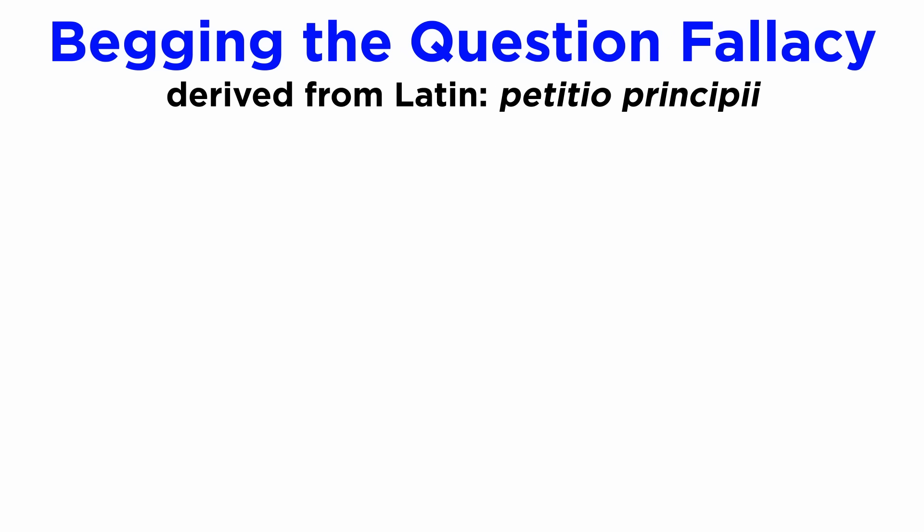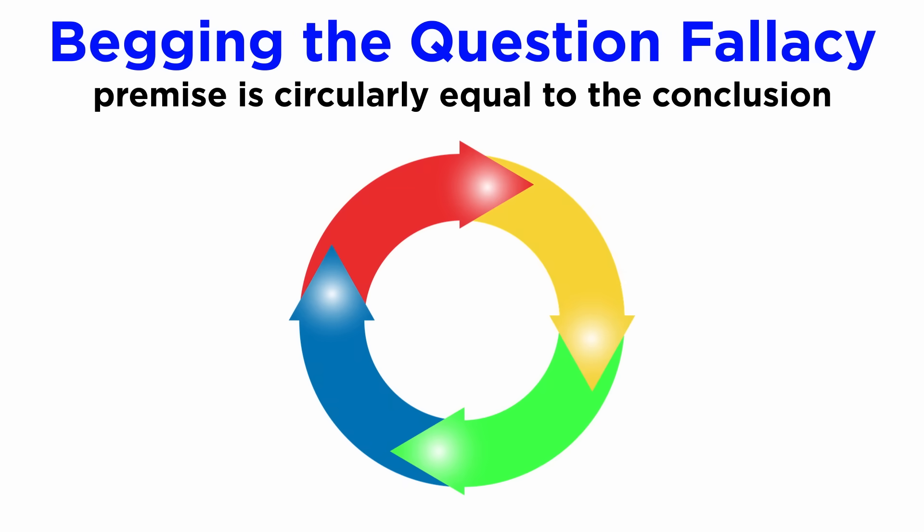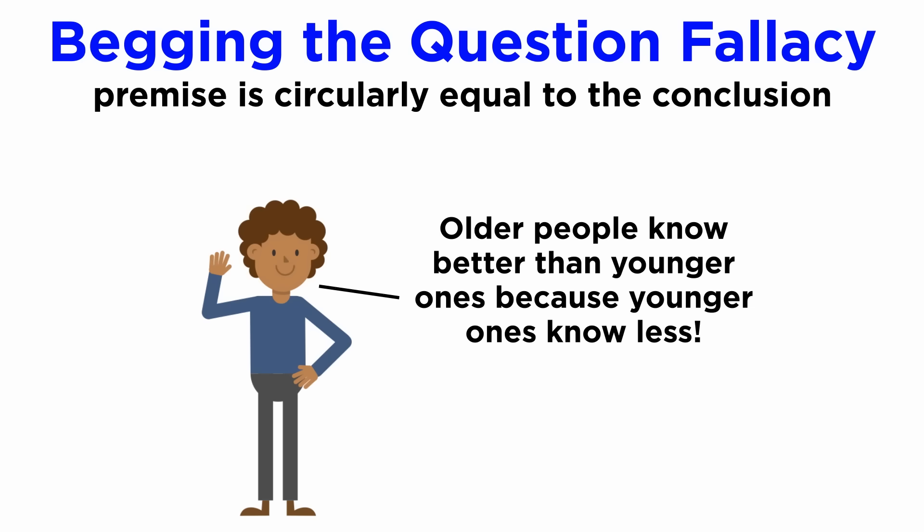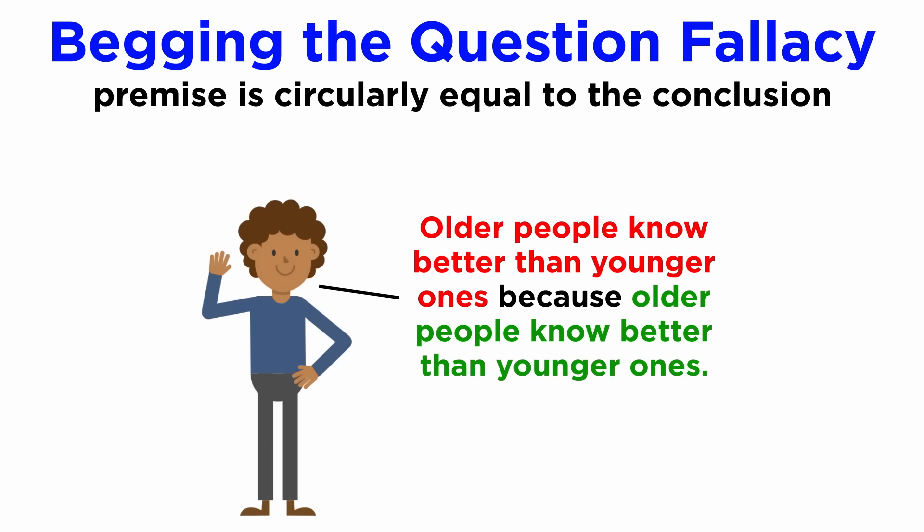A few other common informal fallacies would be the begging the question fallacy, or petitio principii in Latin, where a premise is circularly equal to the conclusion, such as: older people know better than younger ones because younger ones know less — which is the same as saying older people know better than younger ones because older people know better than younger ones. There is no argument there, just a statement attempting to refer to itself.